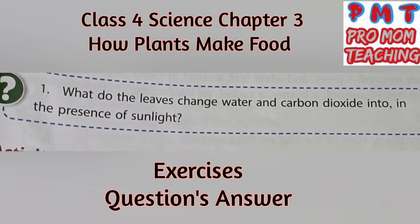Question: What do the leaves change water and carbon dioxide into, in the presence of sunlight? Answer: Using the energy of sunlight, leaves change water and carbon dioxide into a kind of sugar, which is the food of the plant. When we eat food from plants, we actually eat the water, sugar, starch and other substances that the plants make for themselves.